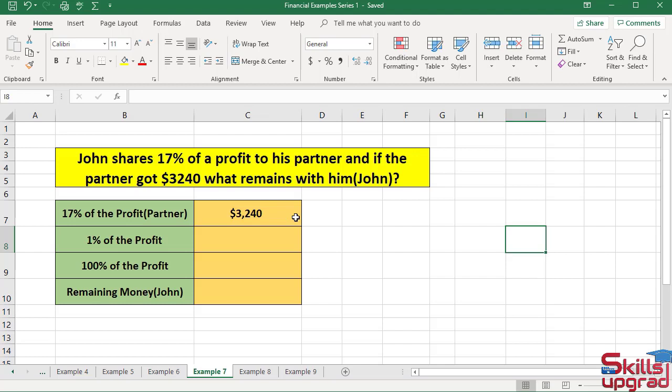I have entered the value of 17% of the profit. John shares 17% of his total profit to his partner, which equals $3240.